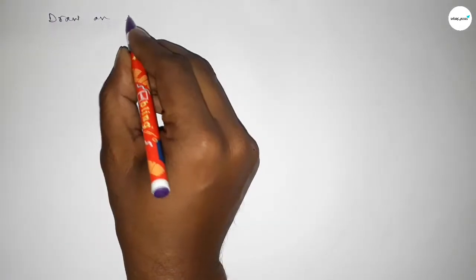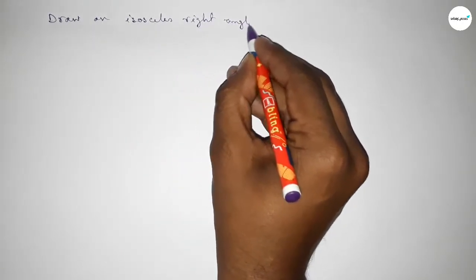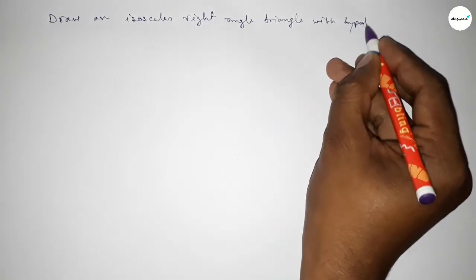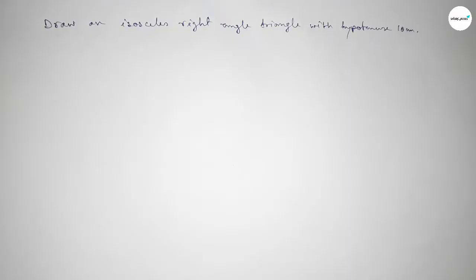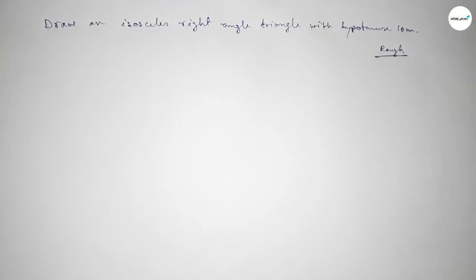Hi everyone, welcome to Say Share Classes. Today in this video we have to draw an isosceles right angle triangle with only given hypotenuse 10 centimeter. So let's start the video. First of all, roughly discussing the calculation first.